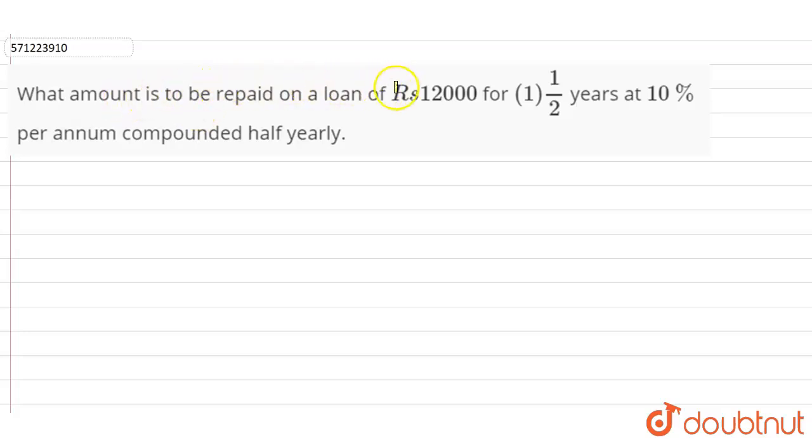What amount is to be repaid on a loan of rupees 12,000 for one and a half years at 10 percent per annum compounded half yearly? So it is given that principle is 12,000, rate of interest is 10 percent, and time is one and a half years.